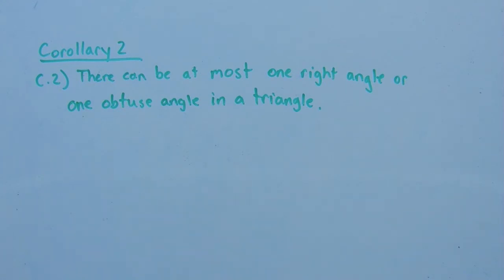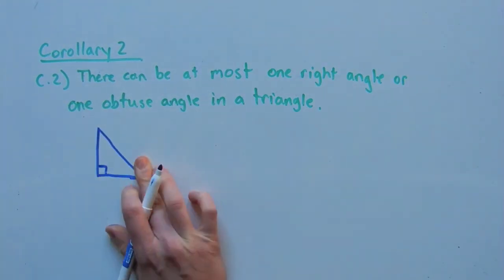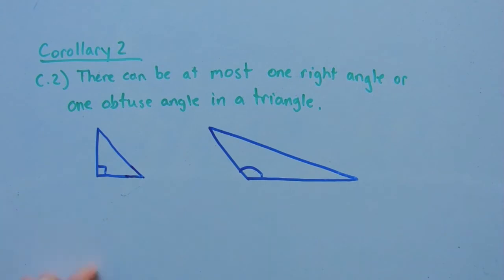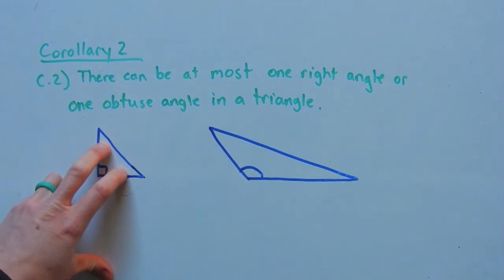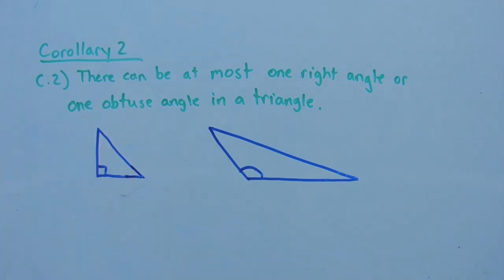So let's look at the different cases. Here is a right triangle. From corollary 1, we learned that the remaining angles of a right triangle are complementary. And therefore, they can't be right and they can't be obtuse, since they equal 90 degrees together.